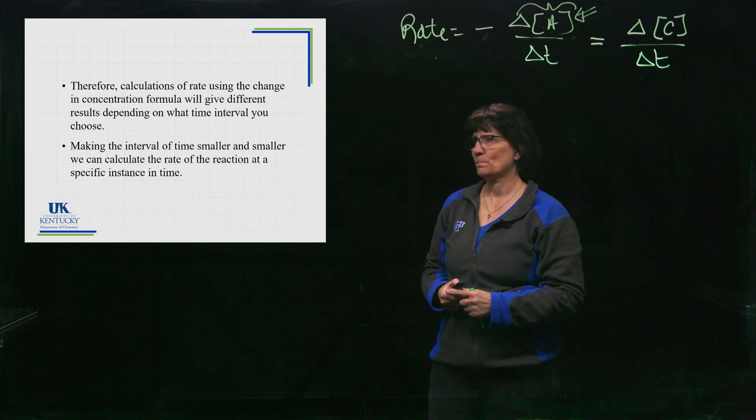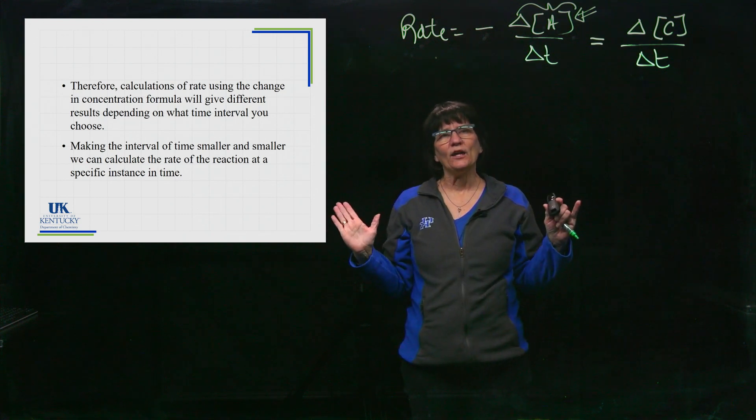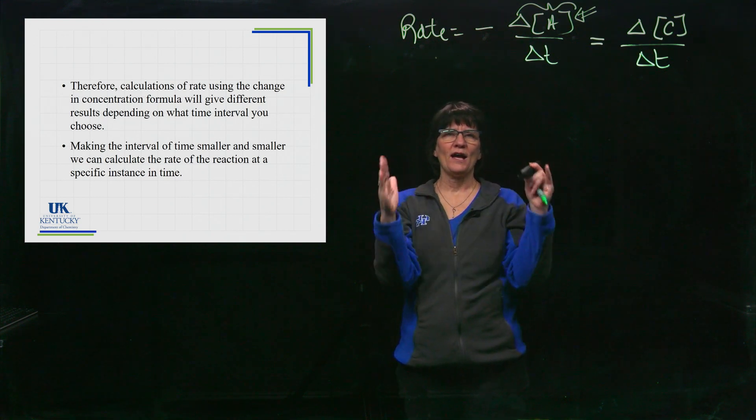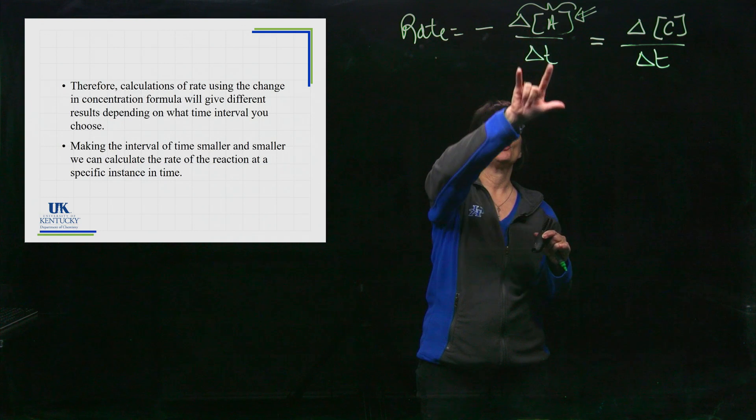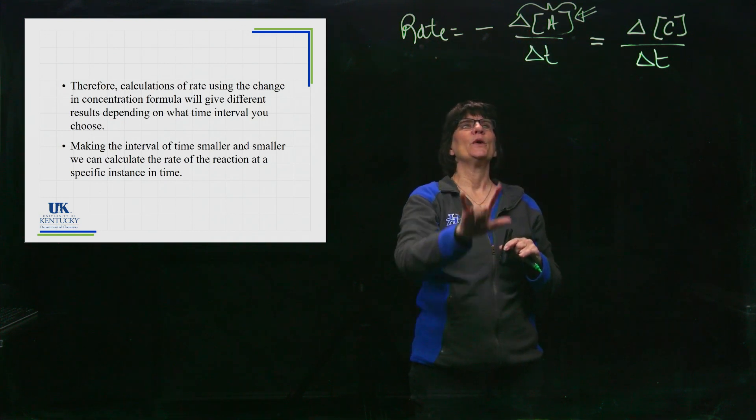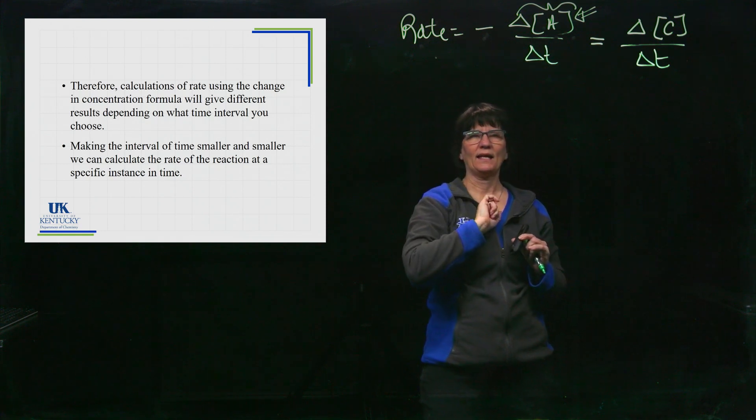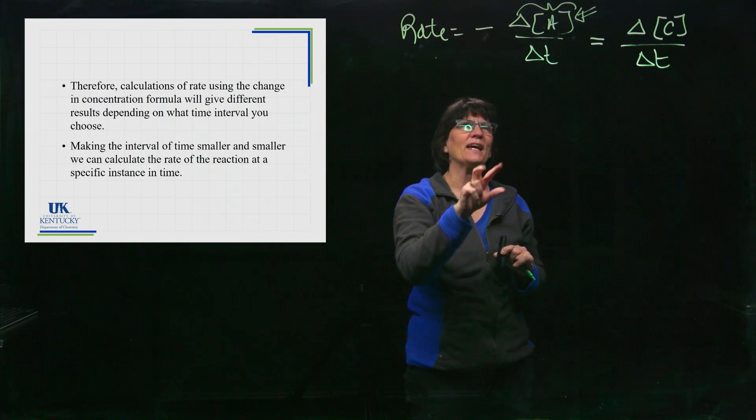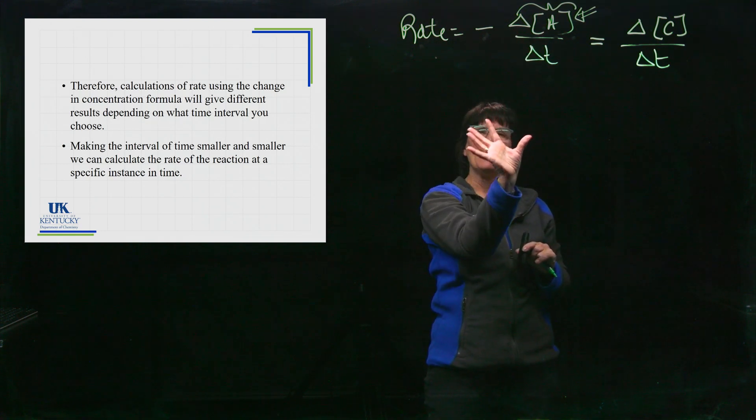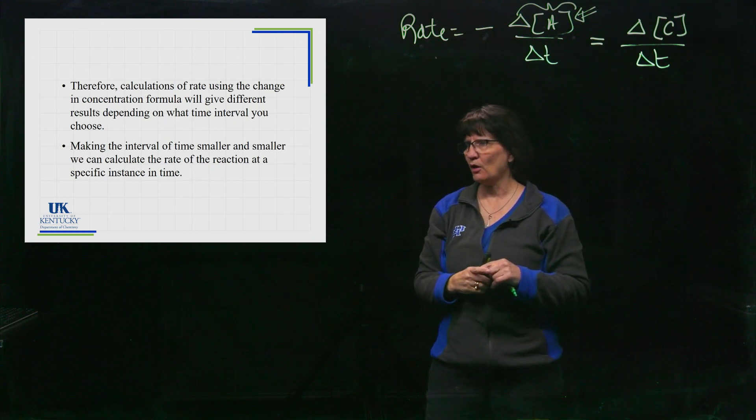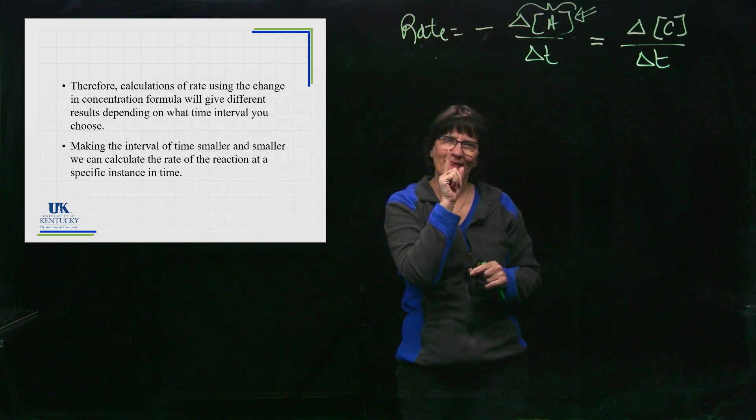Now we can make intervals smaller and smaller. Let's say we try a five second interval, a change in concentration over five seconds. We do a one second interval, change in concentration over one second. We do a 0.1 second interval. Okay, we can keep making that interval smaller and smaller until we can say at this specific time this is how fast the reaction is going.